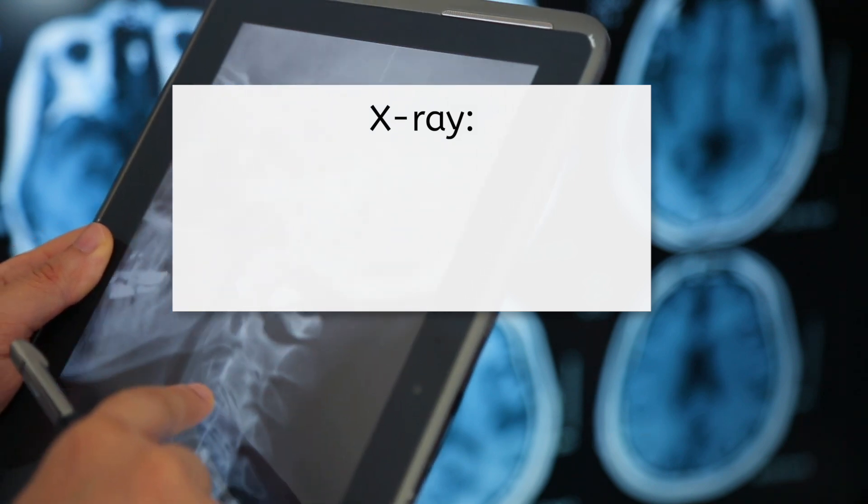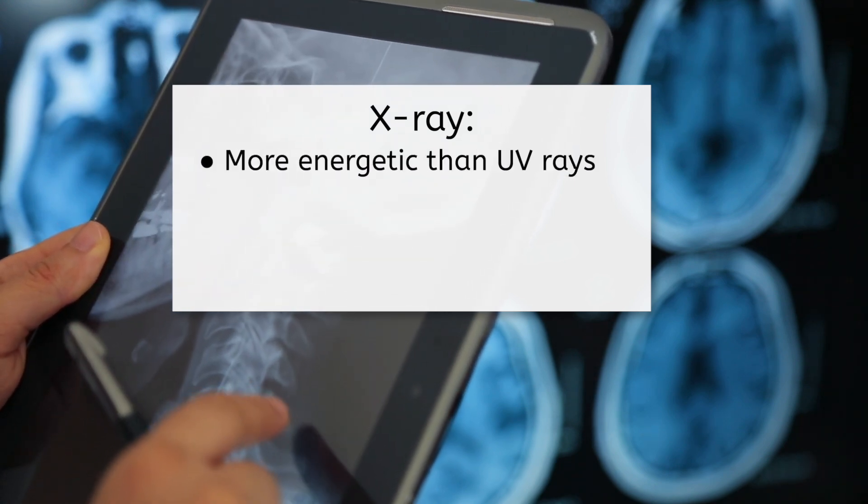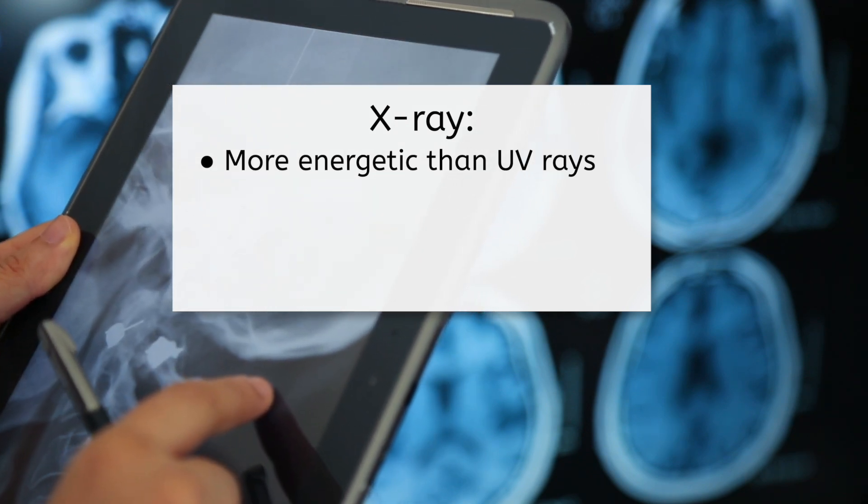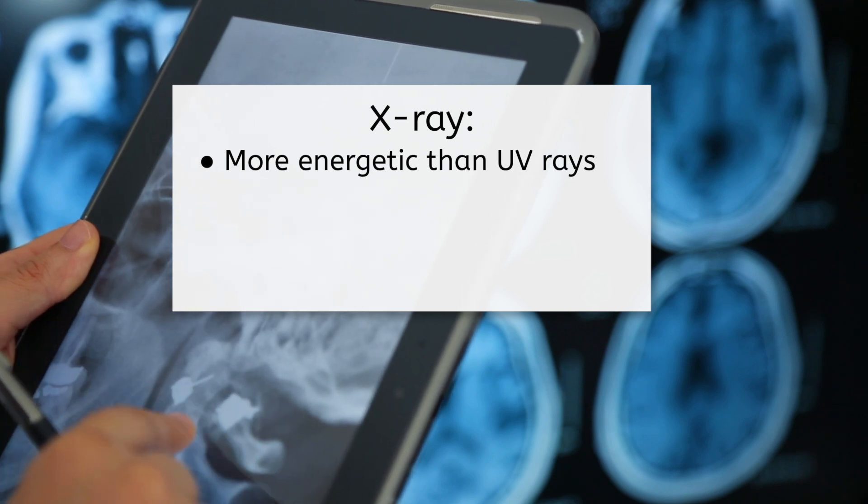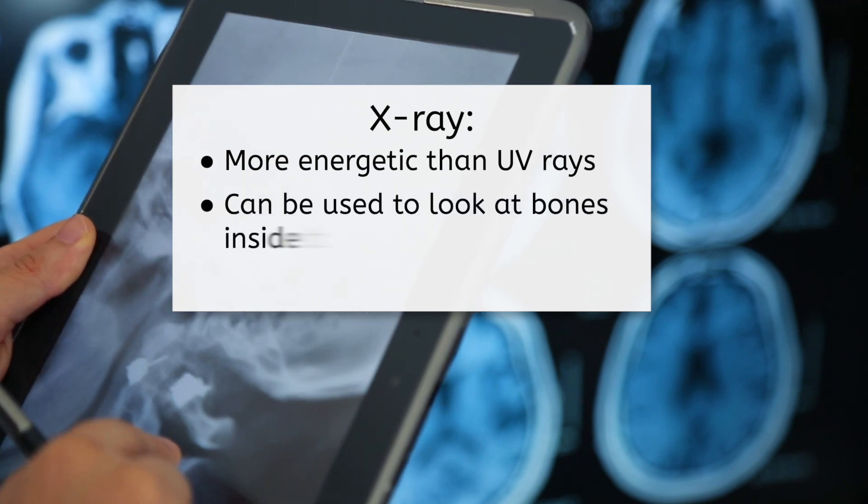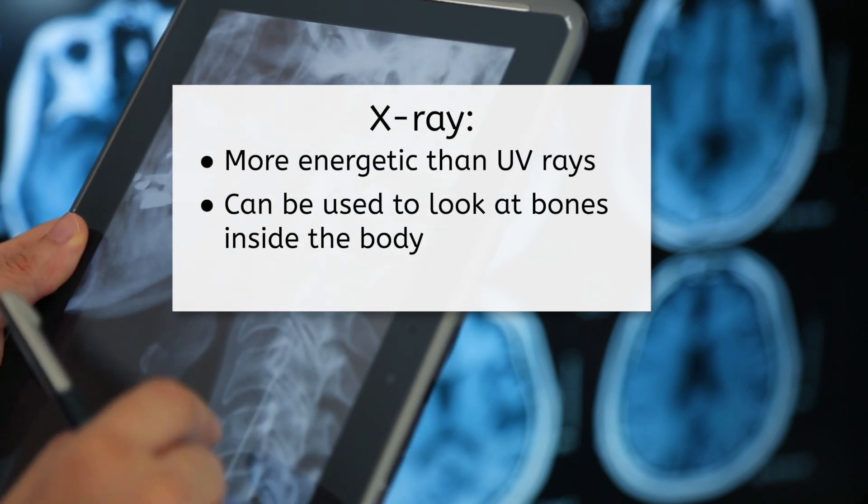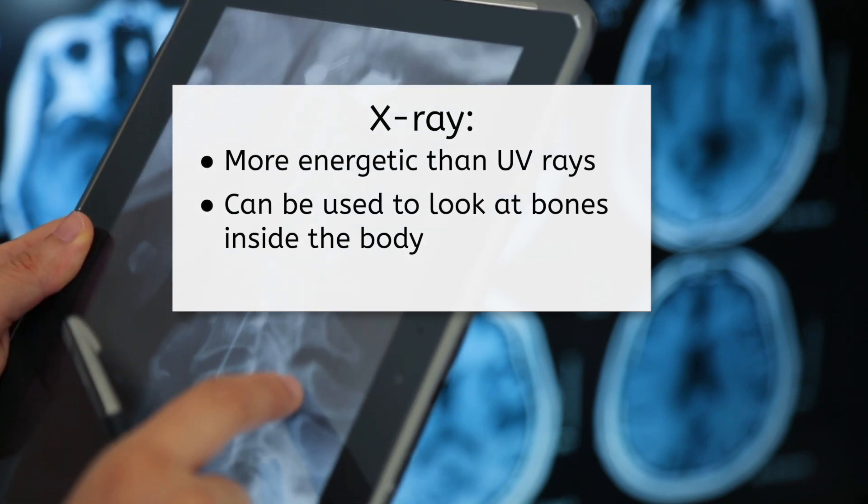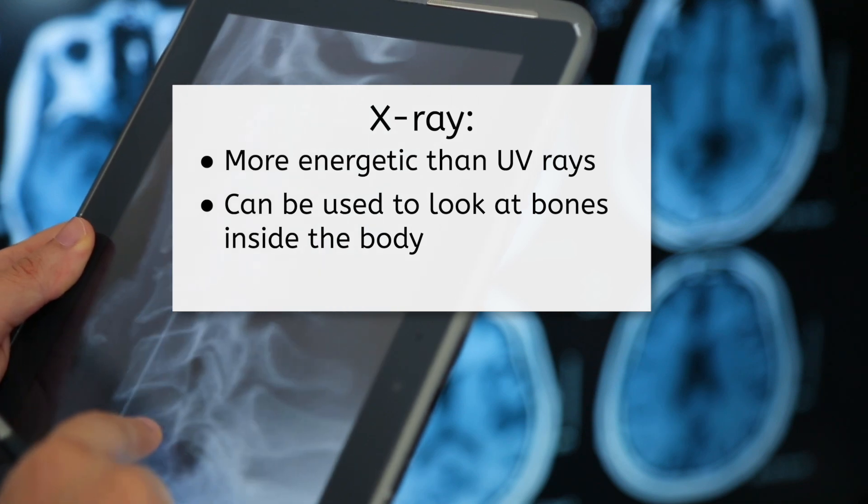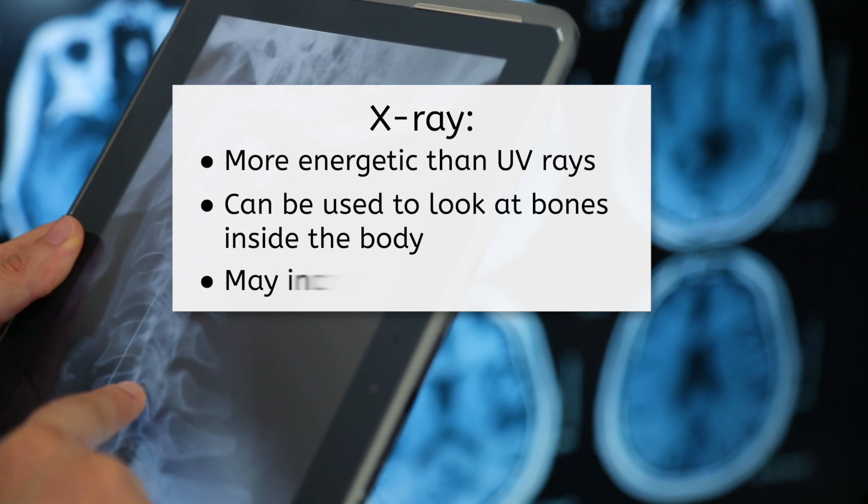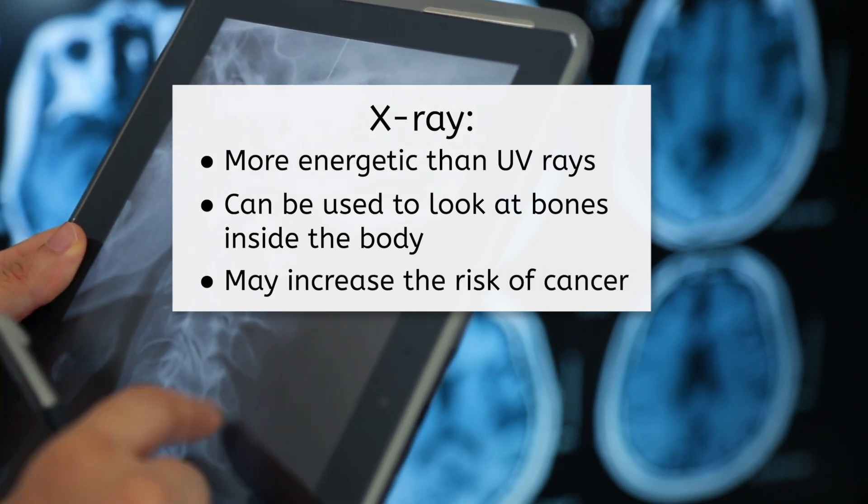Then there are X-rays, even more energetic than UV rays. They're like the super spies of the spectrum, able to pass through many materials that visible light can't. That's why doctors use them to look at bones inside your body, as bones are dense enough to block X-rays and show up as white on an X-ray image. However, being exposed to X-rays on a regular basis is known to increase your risk of cancer. So those that work around X-ray machines must take precautions to limit exposure.